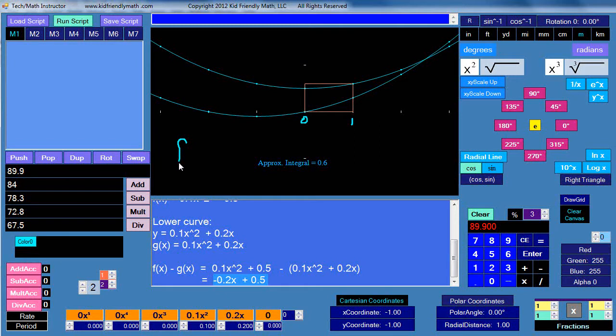That becomes our new function that we're going to use for taking the integral. So we take the definite integral between 1 and 0 of this function: negative 0.2x plus 0.5. After we take the integral and find the exact area, we'll take the approximate integral as well using our triangles and see if we can compare them. So first of all we'll take the integral. That means in this case, using polynomials and the rule of exponents, you raise this by one and divide it by one.